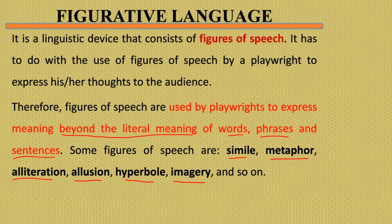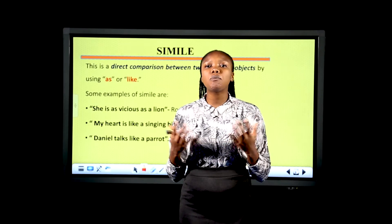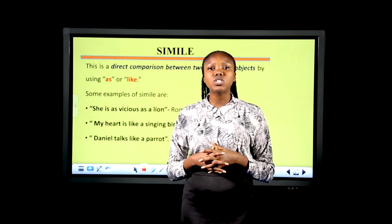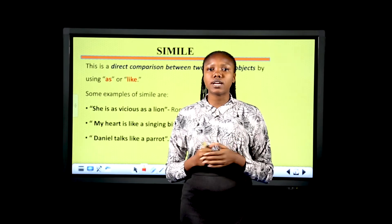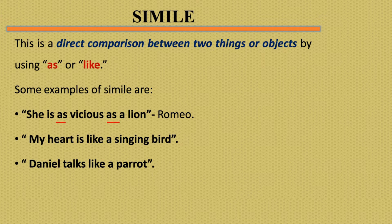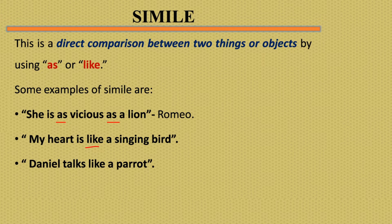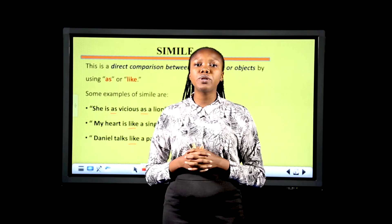Let's take a look at some of these figures of speech one after the other. We'll start with simile. Simile is the direct comparison of two things or objects by using 'as' or 'like.' For example: 'She is as vicious as a lion' — said by Romeo referring to Juliet, comparing her to a lion. 'My heart is like a singing bird' — comparing the heart to a singing bird. 'Daniel talks like a parrot' — comparing Daniel to a parrot, meaning he talks too much.